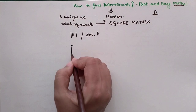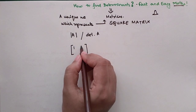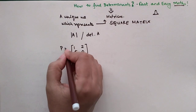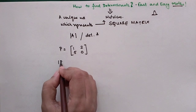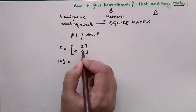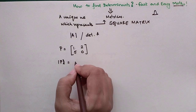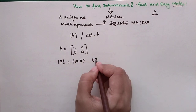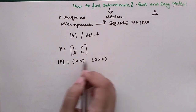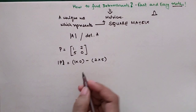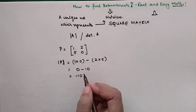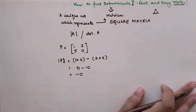Let's see how we find the determinant of a 2×2 matrix. We have the matrix P = [1, 2; 5, 0]. The determinant of P is found by cross multiplication: 1×0 minus 2×5. The sign between the two products is always minus for a 2×2 matrix, so we get 0 − 10 = −10.